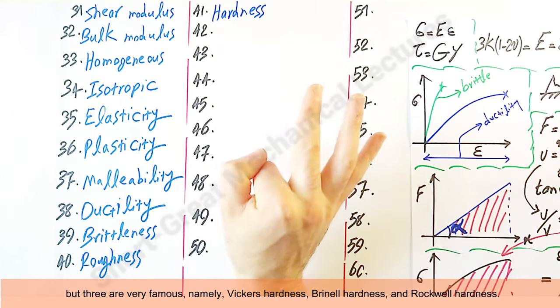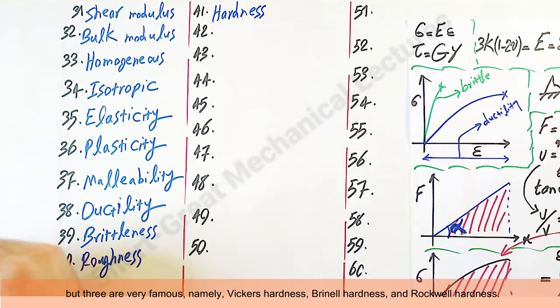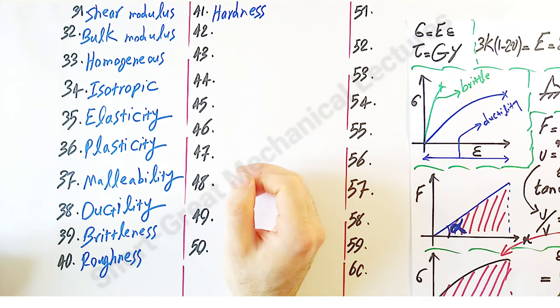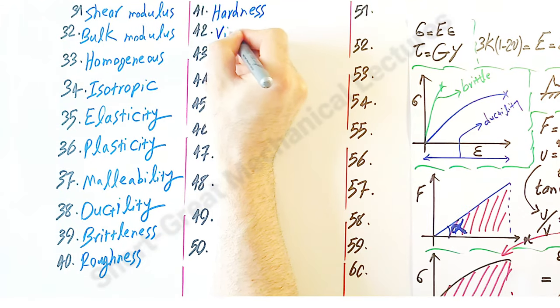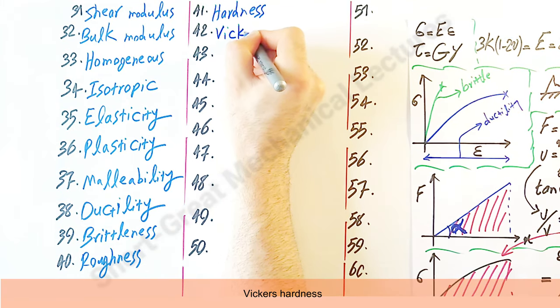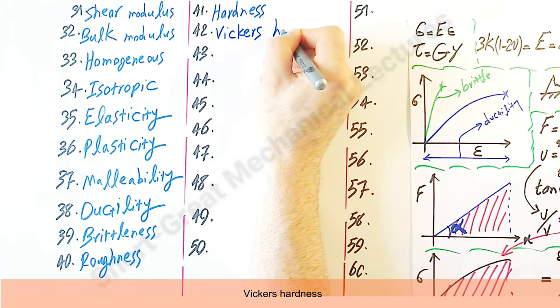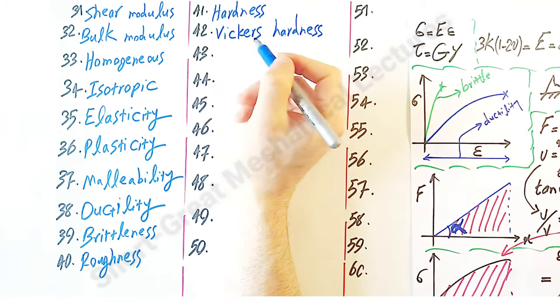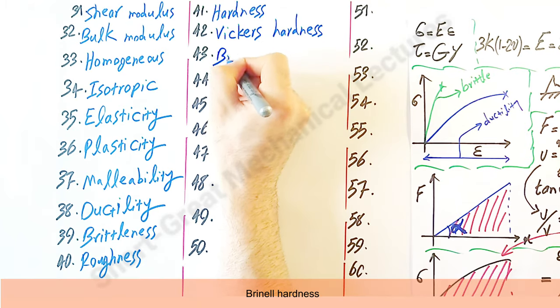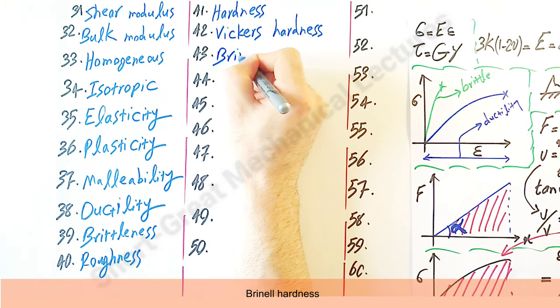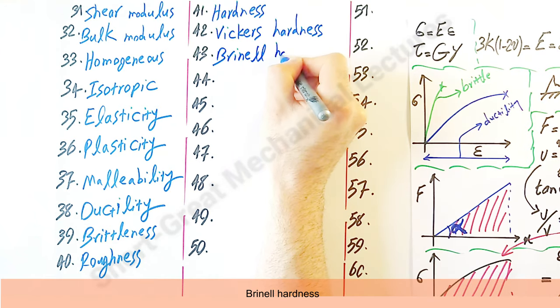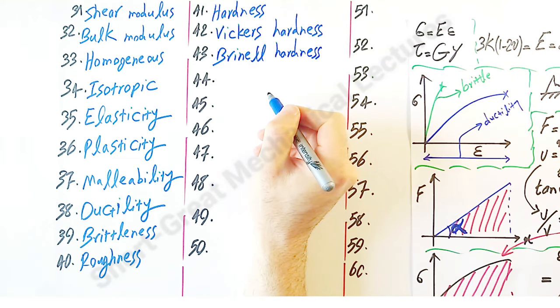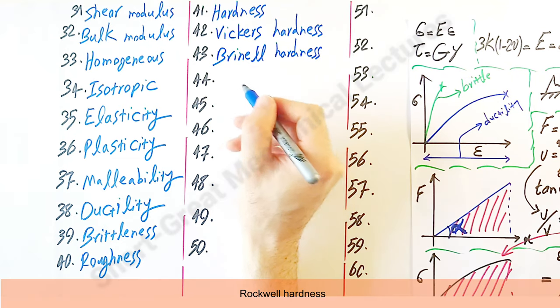So there could be several ways and standards in order to measure the hardness of a material, but three are very famous, namely Vickers hardness, Brinell hardness, and Rockwell hardness.